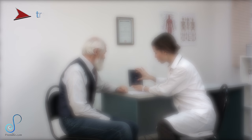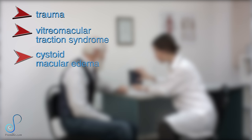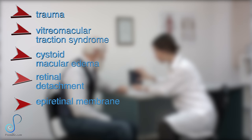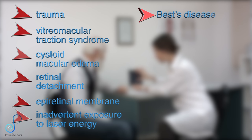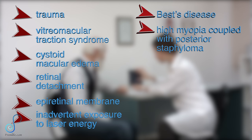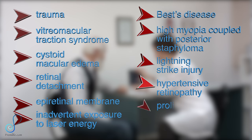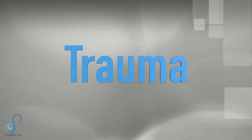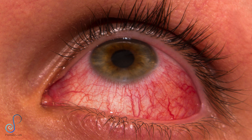Now we will explain the second group of causes: the formation of a macular hole secondarily induced by a pathological process. These include trauma, vitreomacular traction syndrome, cystoid macular edema, retinal detachment, epiretinal membrane, inadvertent exposure to laser energy, Best's disease, high myopia, high myopia coupled with posterior staphyloma, lightning strike injury, hypertensive retinopathy, and proliferative diabetic retinopathy. Regarding trauma: a macular hole can immediately form after a blunt trauma. The initially published description of a macular hole by Herman Knapp in 1869 was of one in a previously traumatized eye. Trauma-related macular holes are suspected to be linked to the transmission of concussive force in a countercoup manner, which leads to the immediate rupture of the macula at its thinnest point.